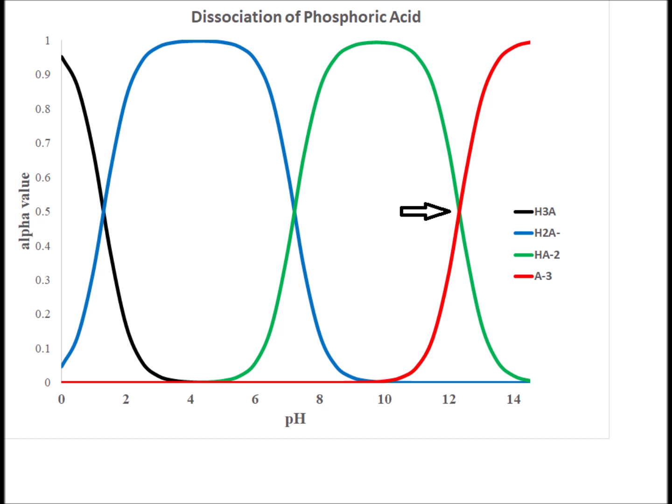The final crossover point between the green line and the red line, between hydrogen phosphate and phosphate ion, corresponds to the pKa of the third acid dissociation constant, giving a value around 12.3.